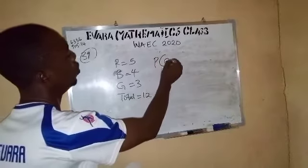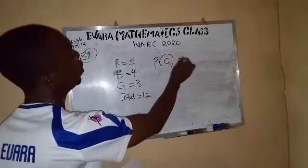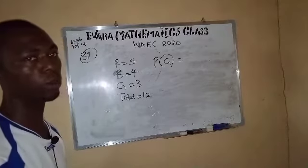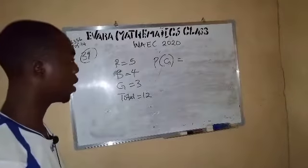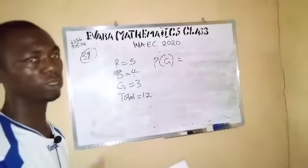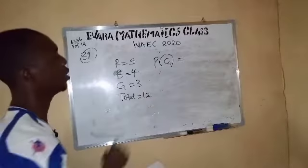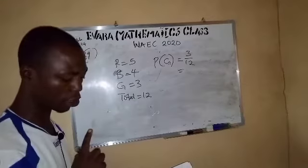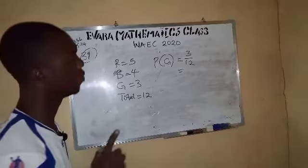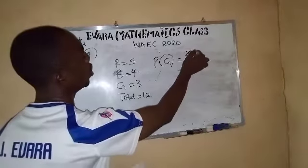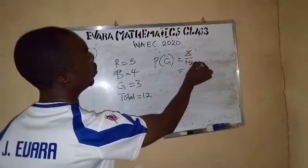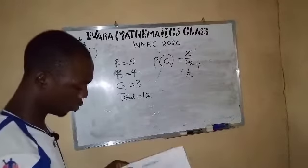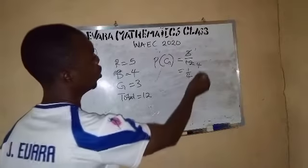So the probability of picking a green ball is the number of required outcome over number of possible outcome. The required outcome is green, and the possible outcome is 12. So that is 3 over 12. And we have to reduce this fraction to the simplest form. 3 here 1, 3 in 12 is 4. So the answer is 1 over 4, which is option D.